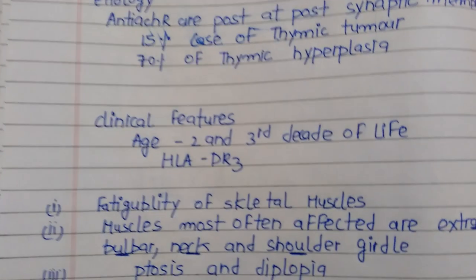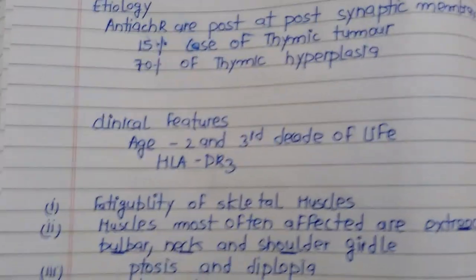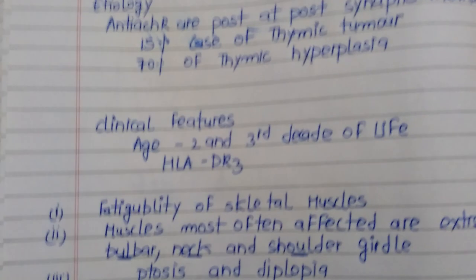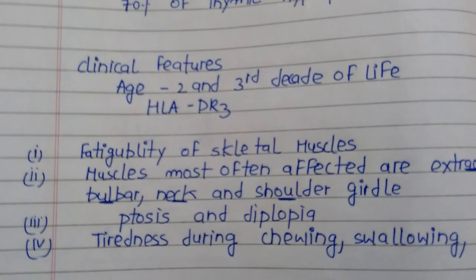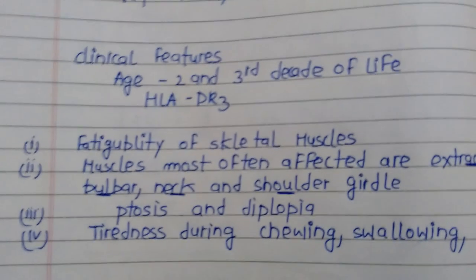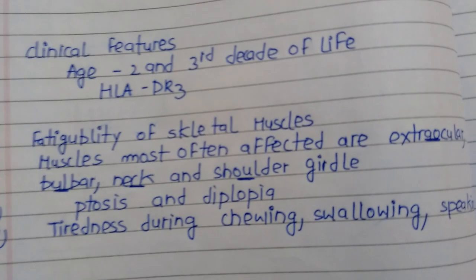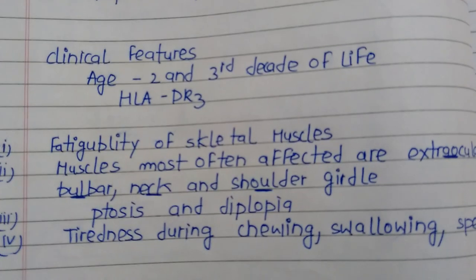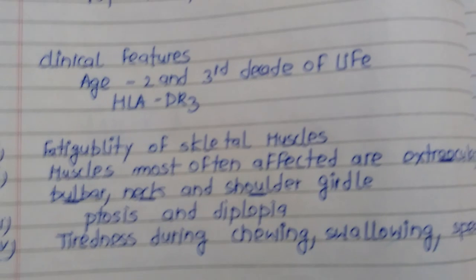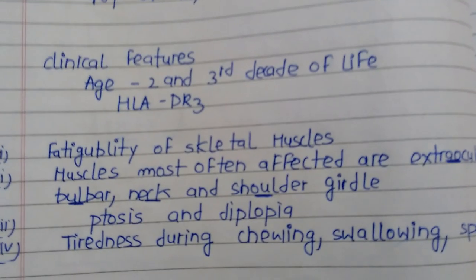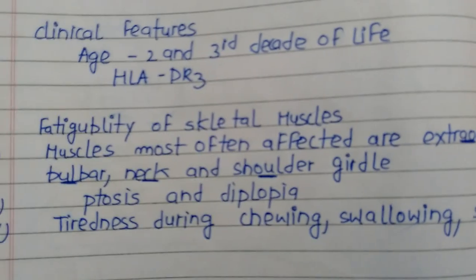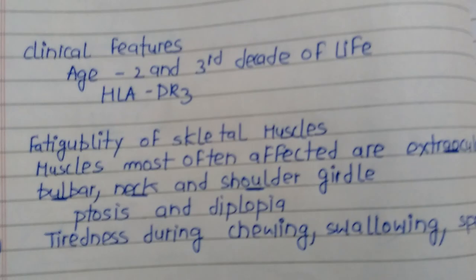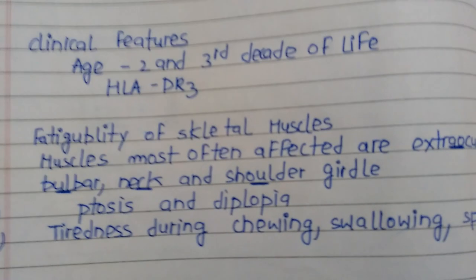In older age, Myasthenia Gravis is typically related to thymoma, which is a type of cancerous mass. The muscles involved include extra-ocular, bulbar, neck, and shoulder girdle muscles — these four groups are important to remember.